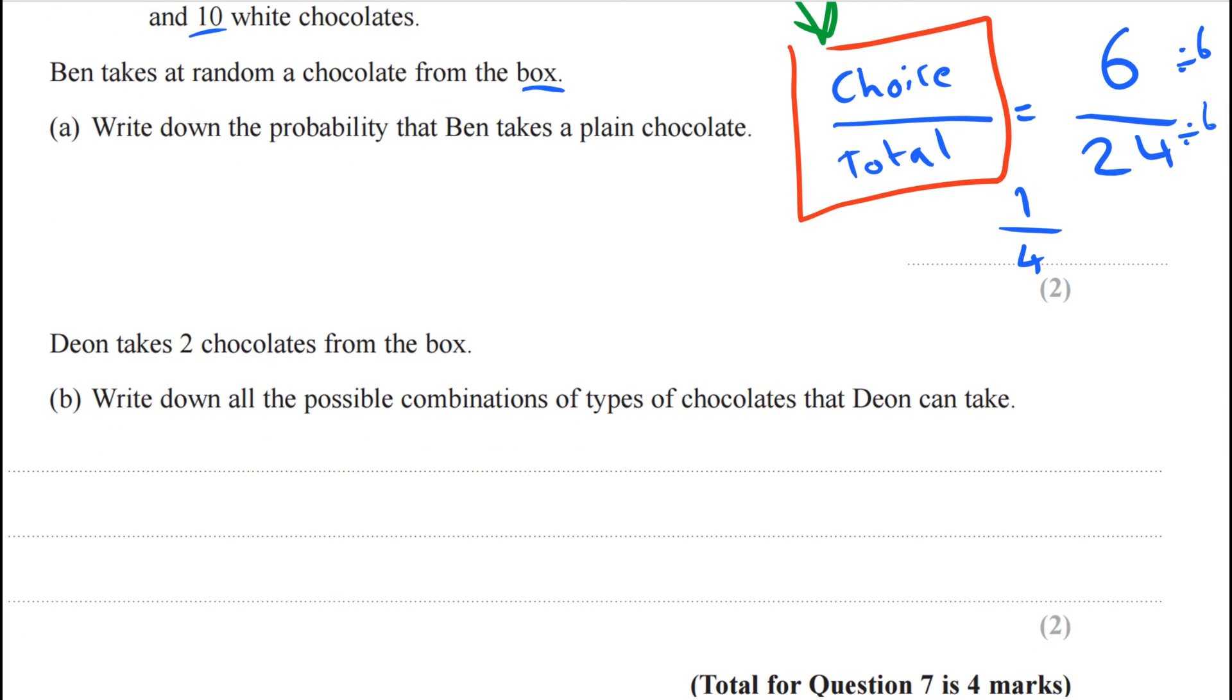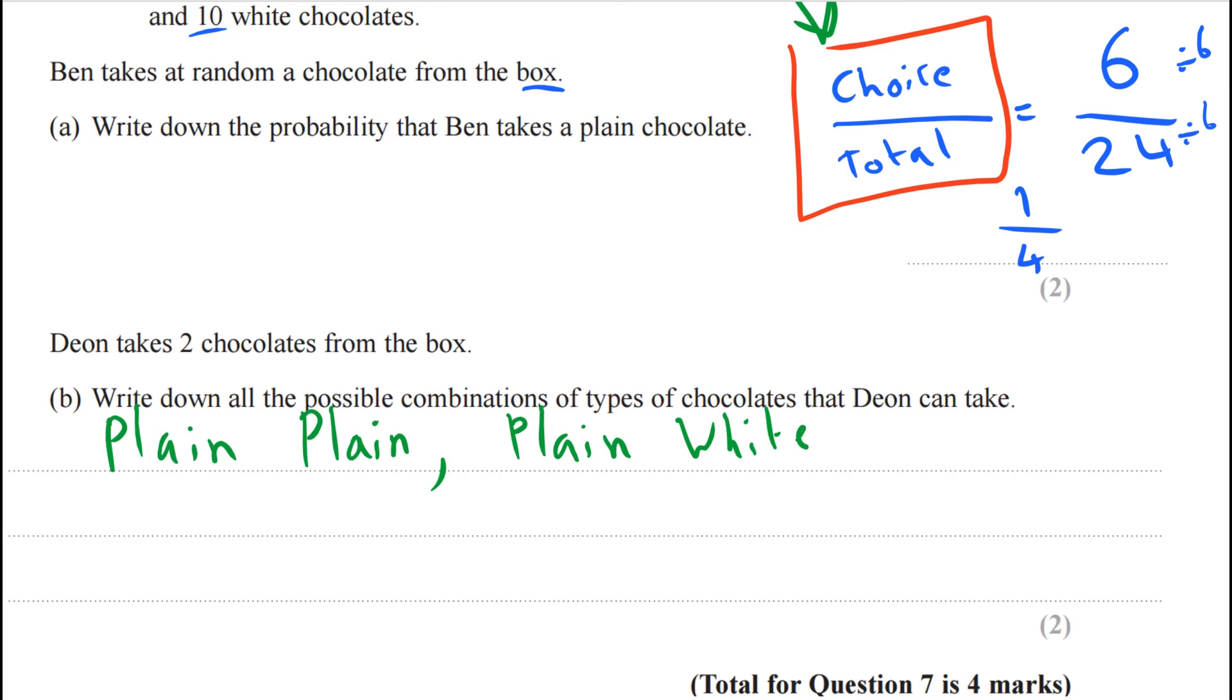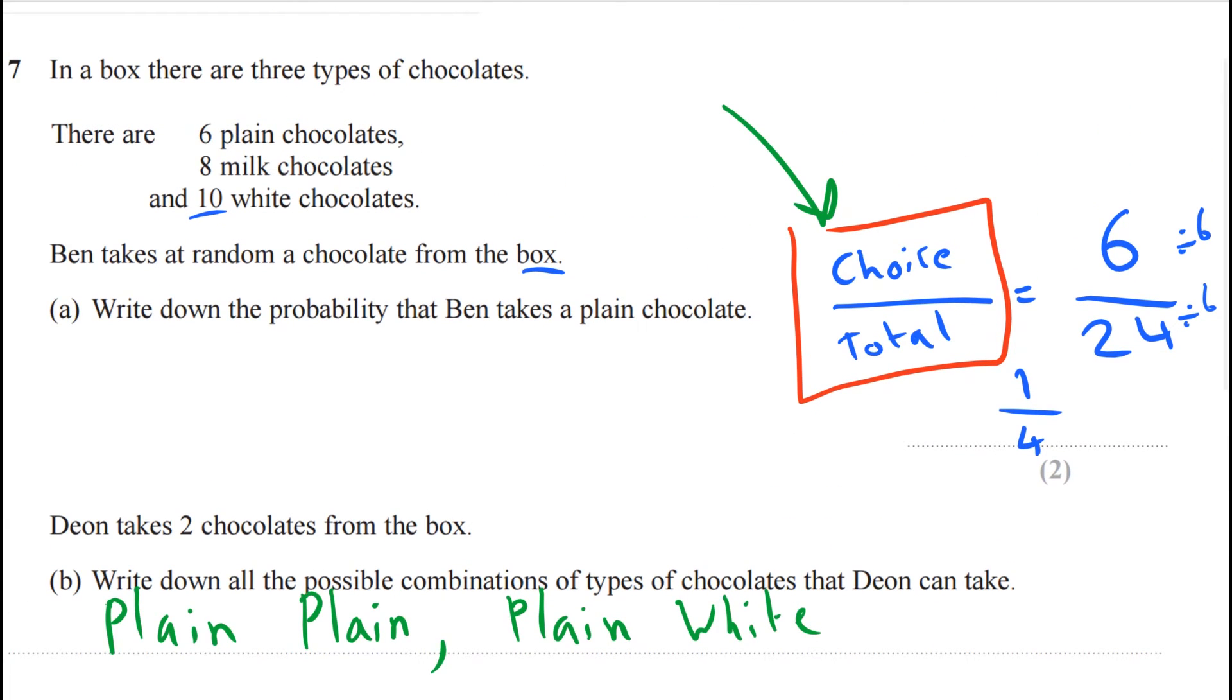First let's start with plain. So with plain we could have plain and then we could have plain again, couldn't we? So that's one combination. Now we could have plain and then white for example. And notice I'm going through the combinations with plain. I could have plain and then milk, and I've gone through all the different combinations with the first one, with plain.